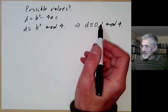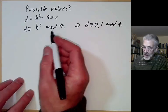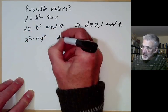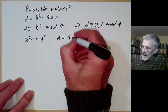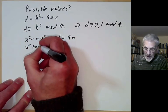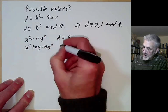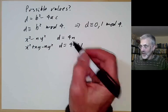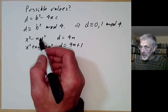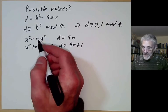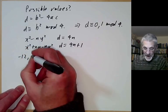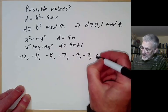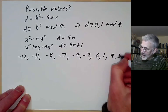Conversely, if d satisfies this condition, there's always a form with that discriminant. For example, x squared minus ny squared has discriminant d equal to 4n, and x squared plus xy minus ny squared has discriminant d equals 4n plus 1. So for any number of the form 4n or 4n plus 1, there's at least one binary quadratic form with that discriminant. The possible discriminants are: minus 12, minus 11, minus 8, minus 7, minus 4, minus 3, 0, 1, 4, 5, and so on.